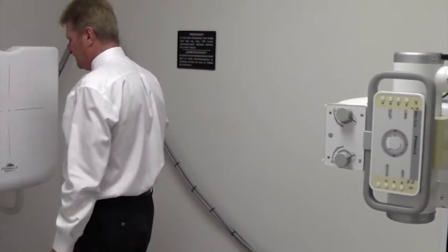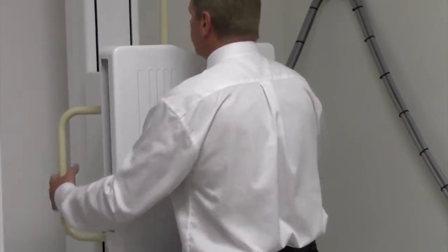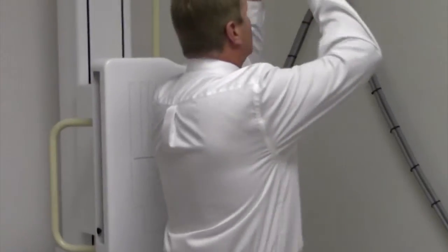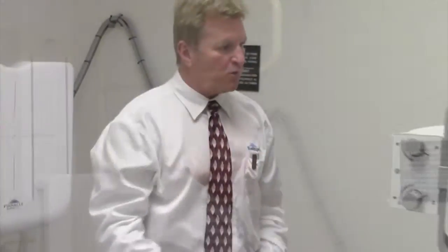For chest x-rays, the wall stand includes patient assist bars on each side for security, for the stabilization for the patient, for the PA view, as well as a bar to hold onto for lateral chest x-rays.